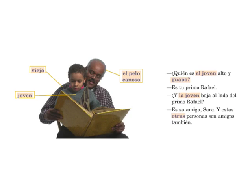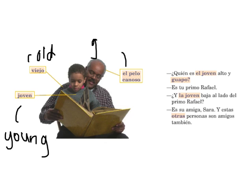Here you can see the boy and his grandfather talking. We have a couple more words here. Joven means young, while viejo means old. And pelo canoso is gray hair. You'll notice that whether it's a man or a woman that you're talking about, this color is describing pelo, so it will always be in the masculine form.